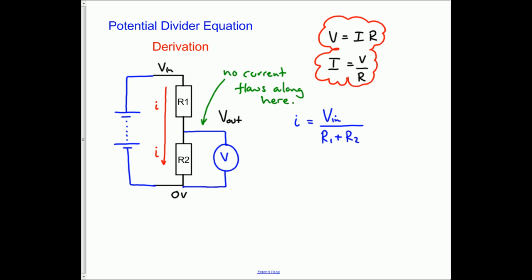We also know that for the voltmeter, V_out is given by IR. Now which R? Well, the voltmeter's attached to R2, so it's R2. If we combine those two together, we get V_out = V_in × R2 / (R1 + R2). And that's our potential divider equation, a very straightforward derivation from Kirchhoff's laws and the resistor equation.